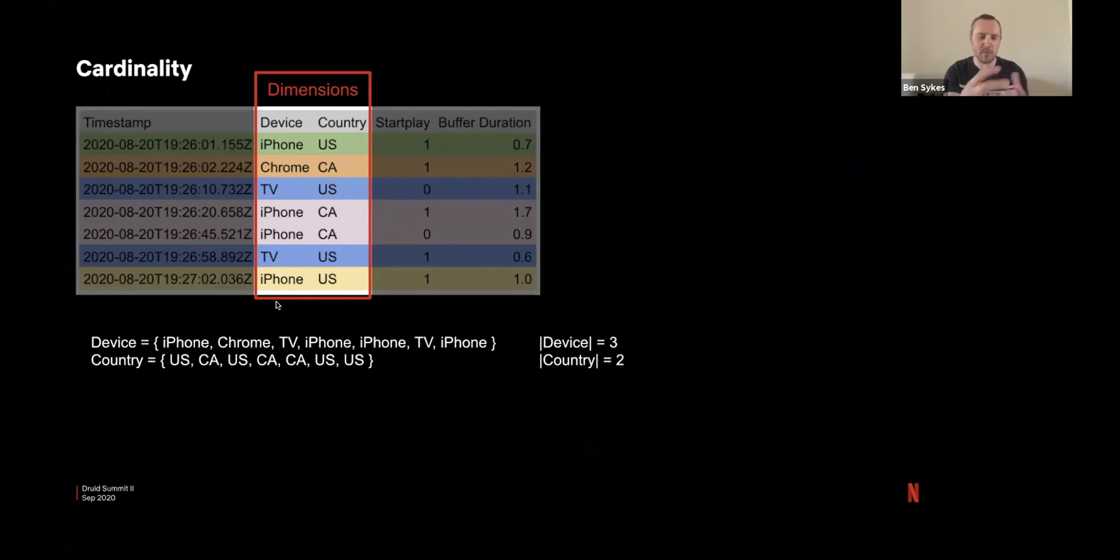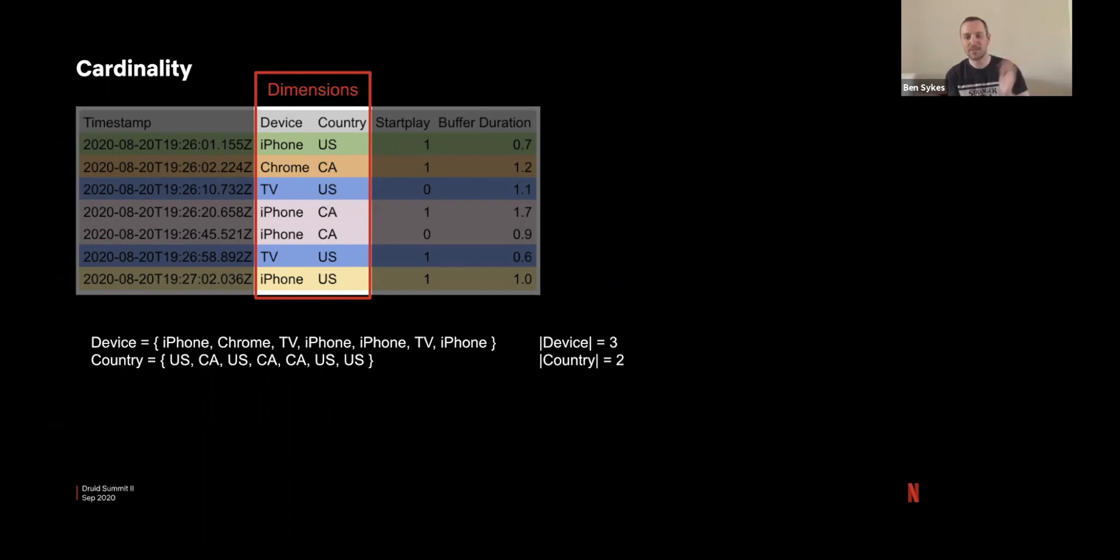For the sample here we have these values in the device dimension, cardinality is therefore three and the country is two. Which seems fine—if you have every possible combination in this dataset you're going to have six different rows. Yeah okay, we can handle that.